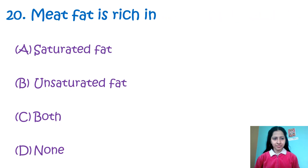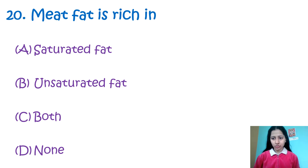Question 20: Meat fat is rich in — saturated fat, unsaturated fat, both, or none. Meat fats are actually rich in saturated fats and monounsaturated fats, but maximum fat is present in saturated form. So the correct answer is option A, saturated fat.